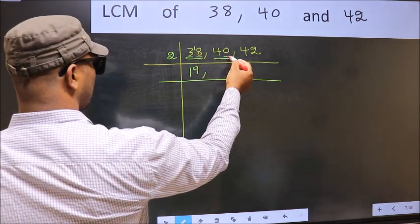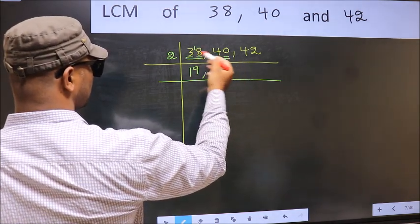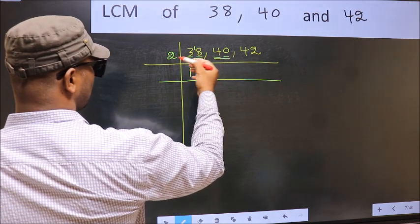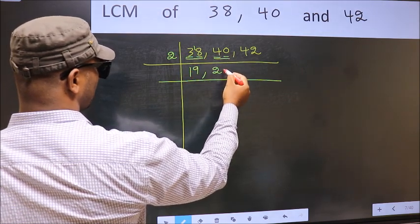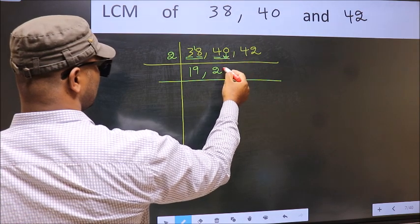The other number 40, last digit is 0, so this is divisible by 2. First number 4, when do we get 4 in 2 table? 2 times 2 is 4. This 0 as it is down.